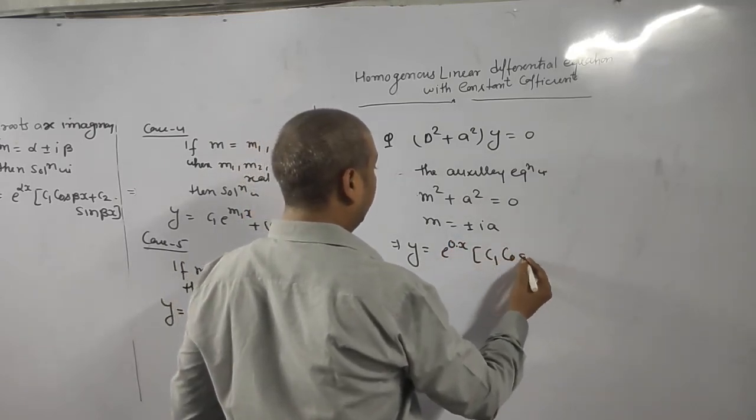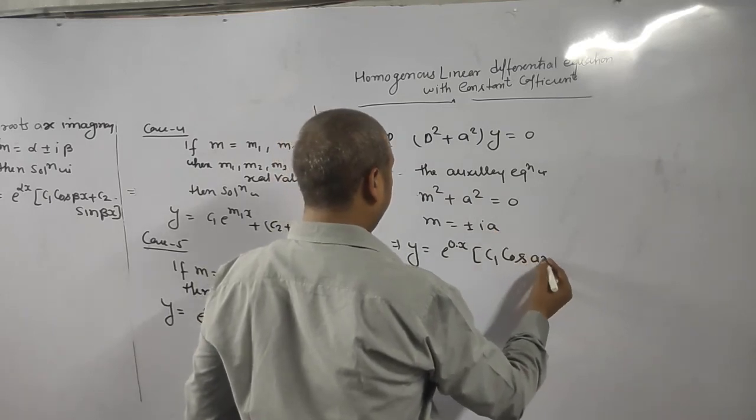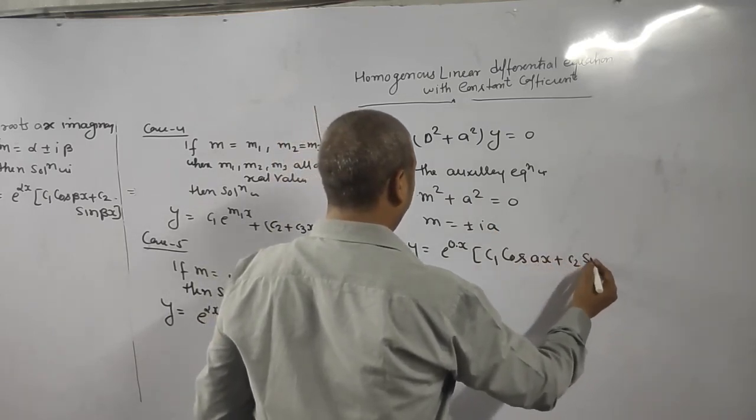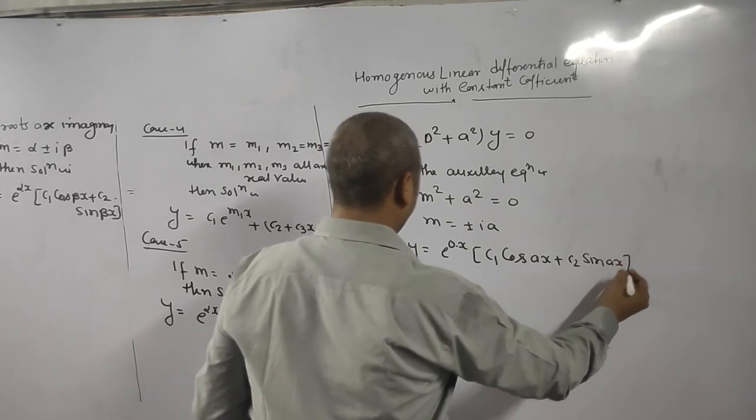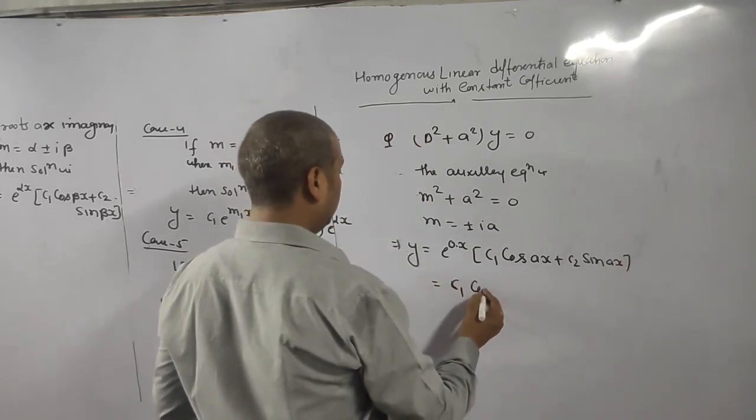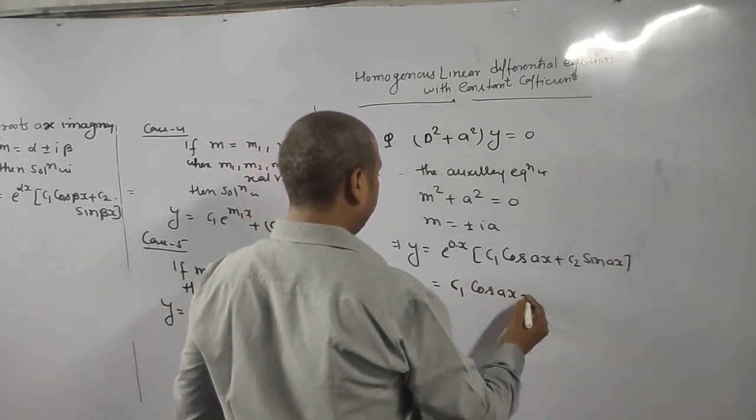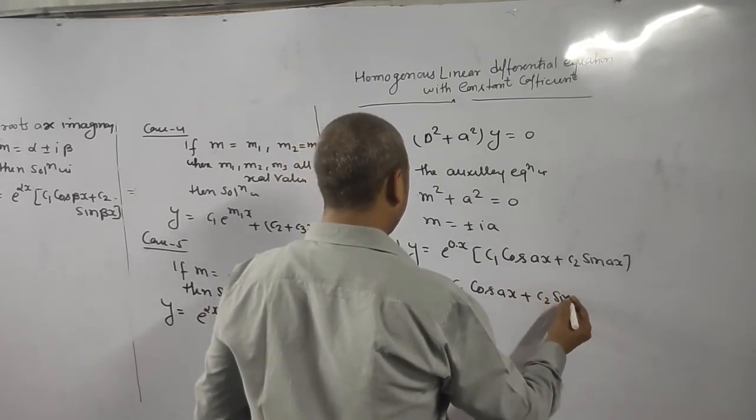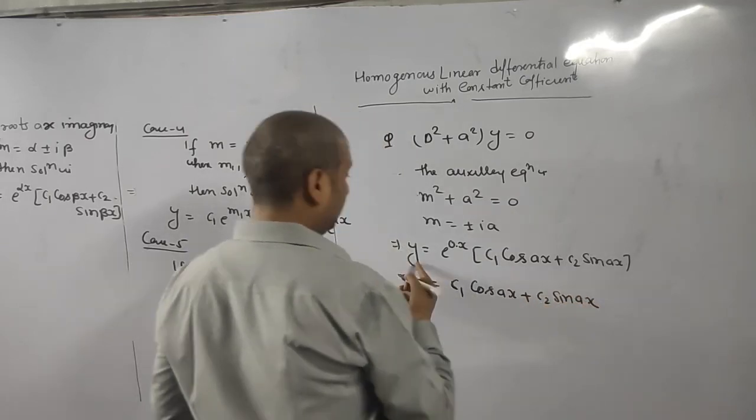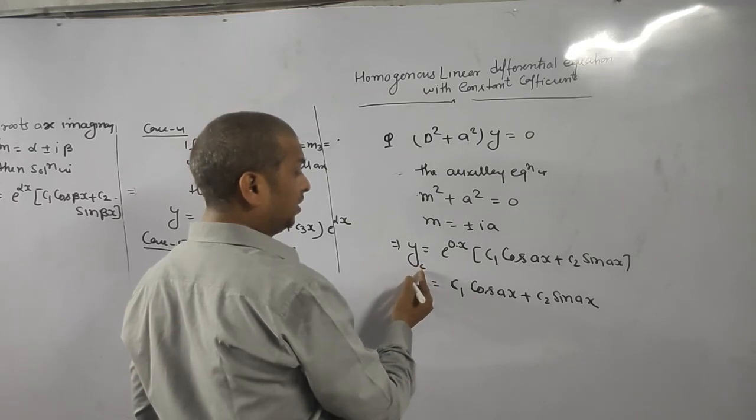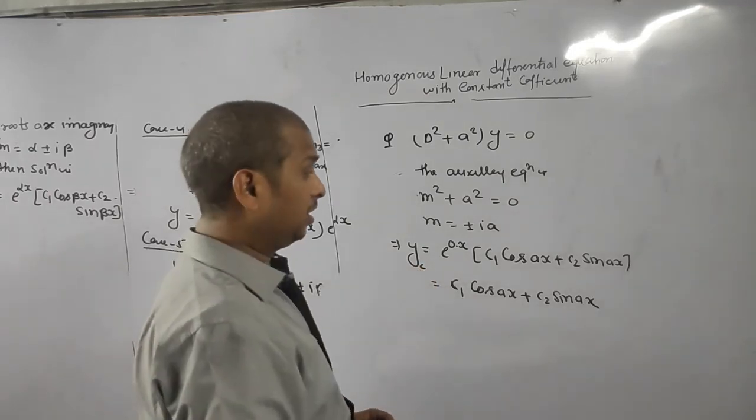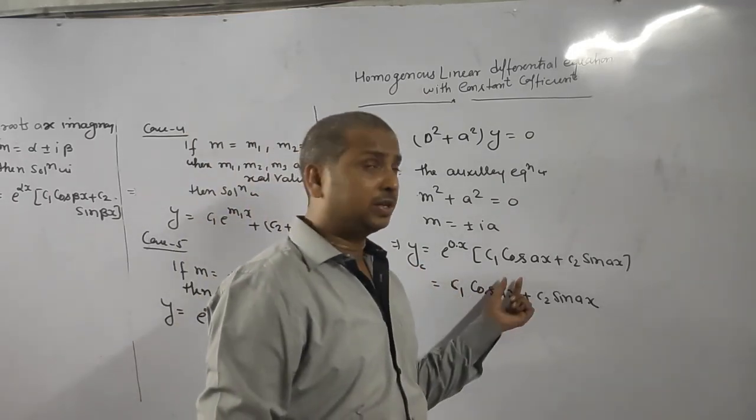C1, what is beta value? A cos ax plus c2 sin ax. So what is your solution? C1 cos ax plus c2 sin ax. This is sometimes we will denote by yc. Yc means complementary function.